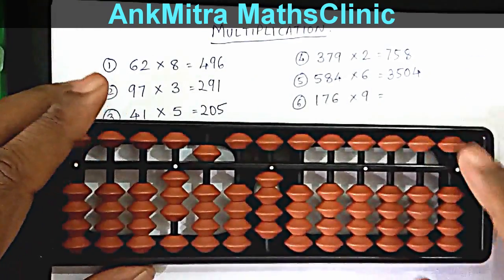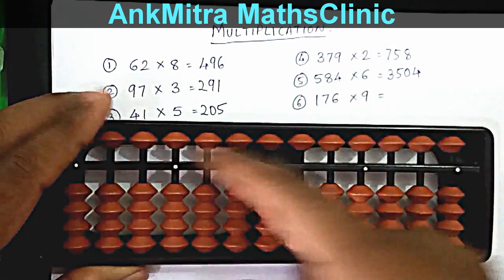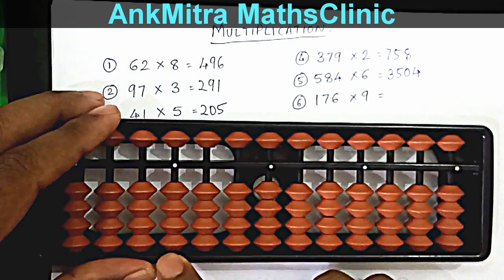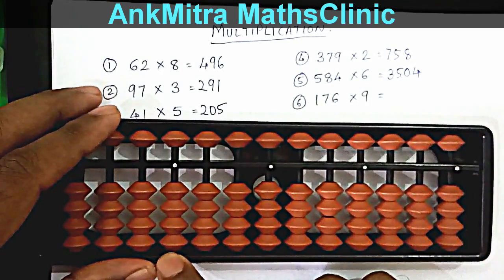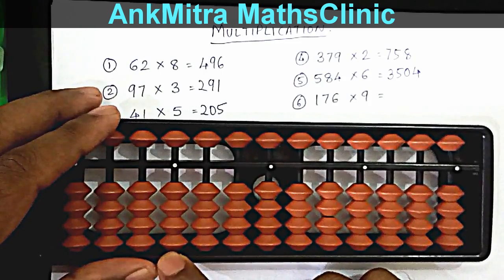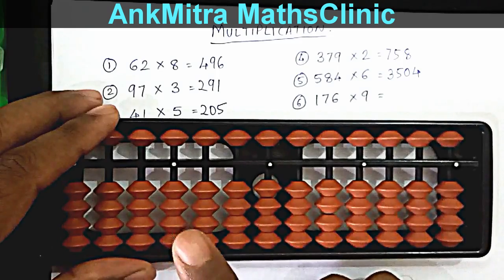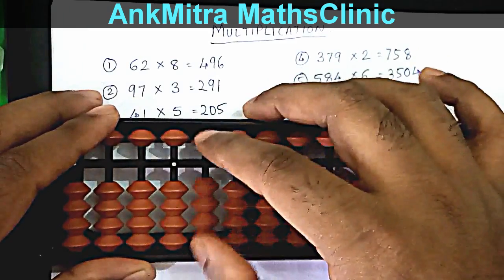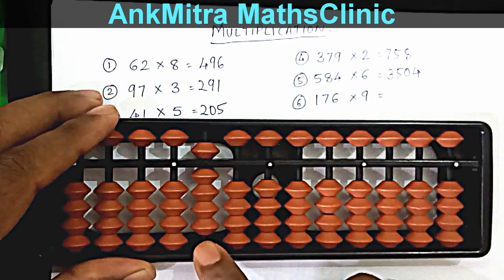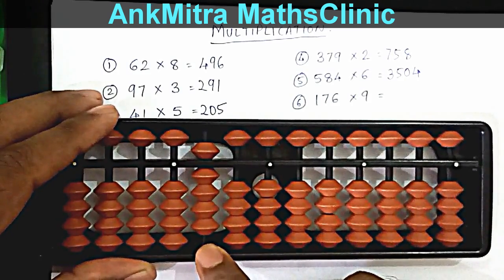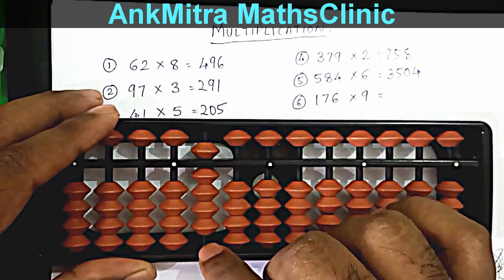The last example is 176 multiplied by 9. Starting on the fourth rod, 1 times 9 is just 9, so we read it as 09 — 0 on the fourth rod and 9 on the third rod. Then 7 times 9 is 63, which has to be added from the third rod — adding 6 using the big friend formula.